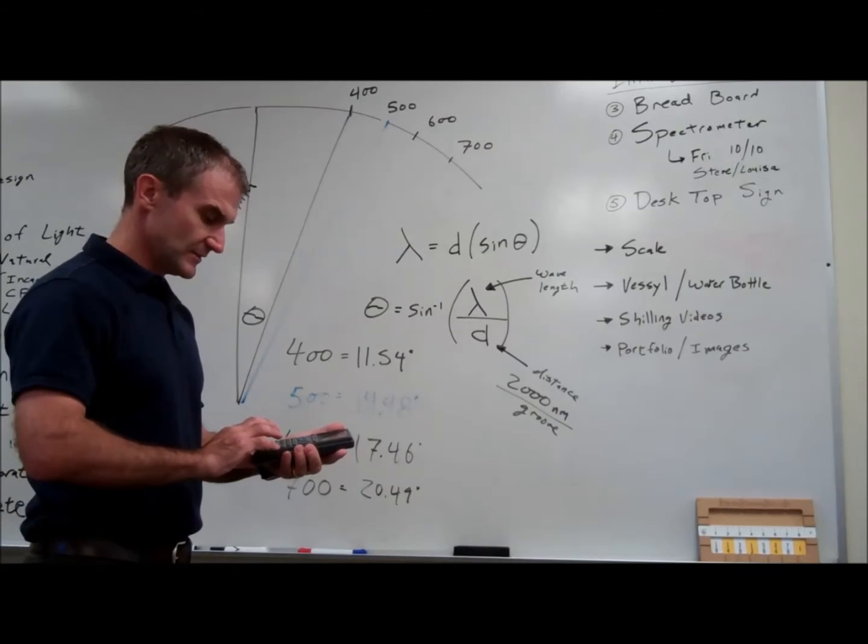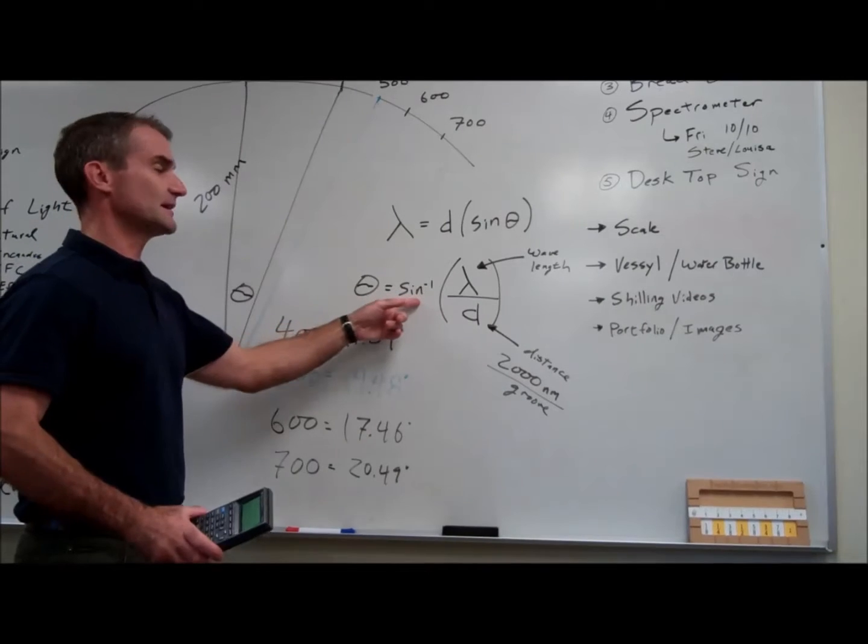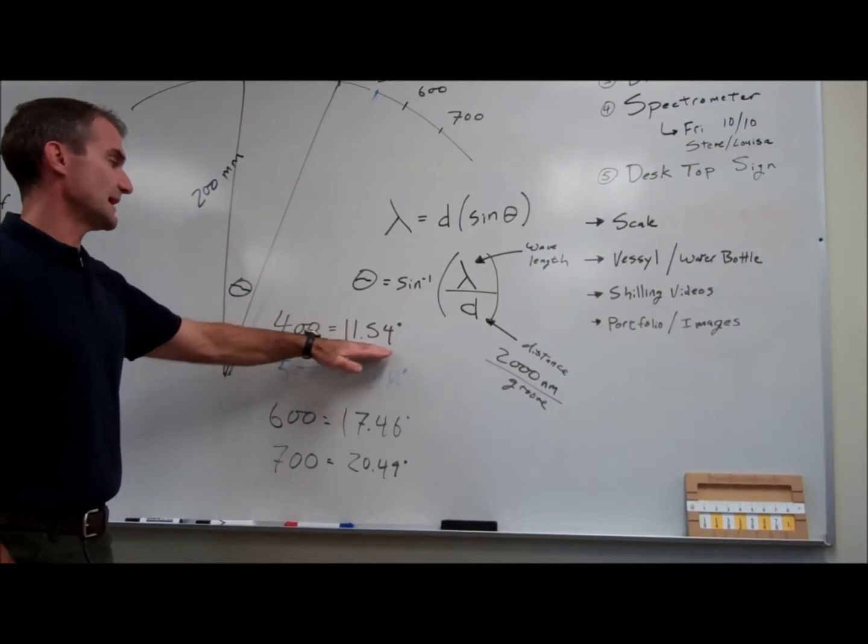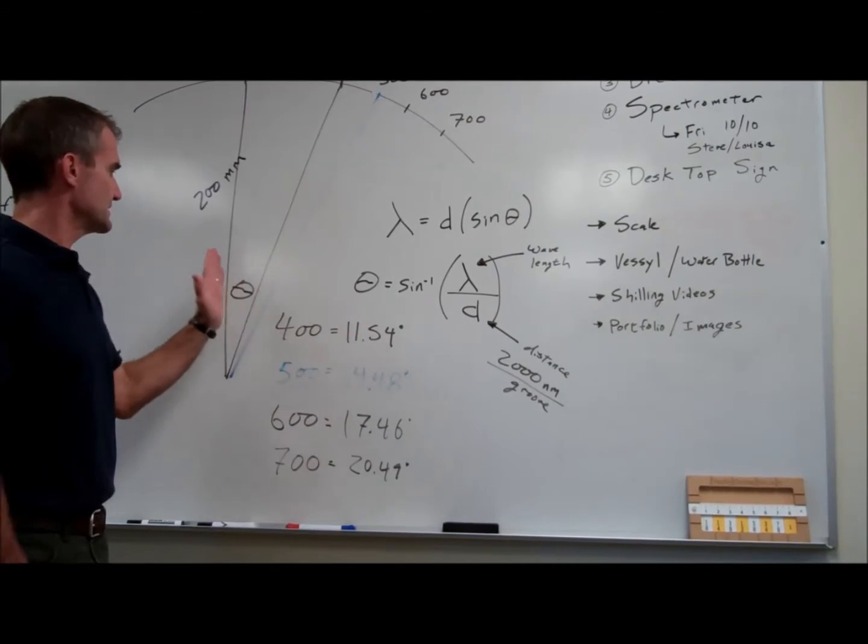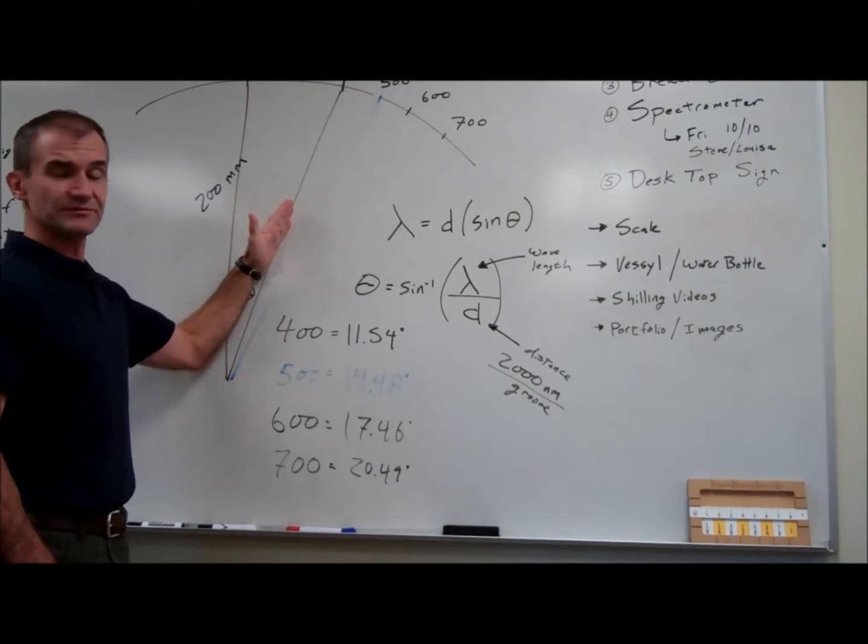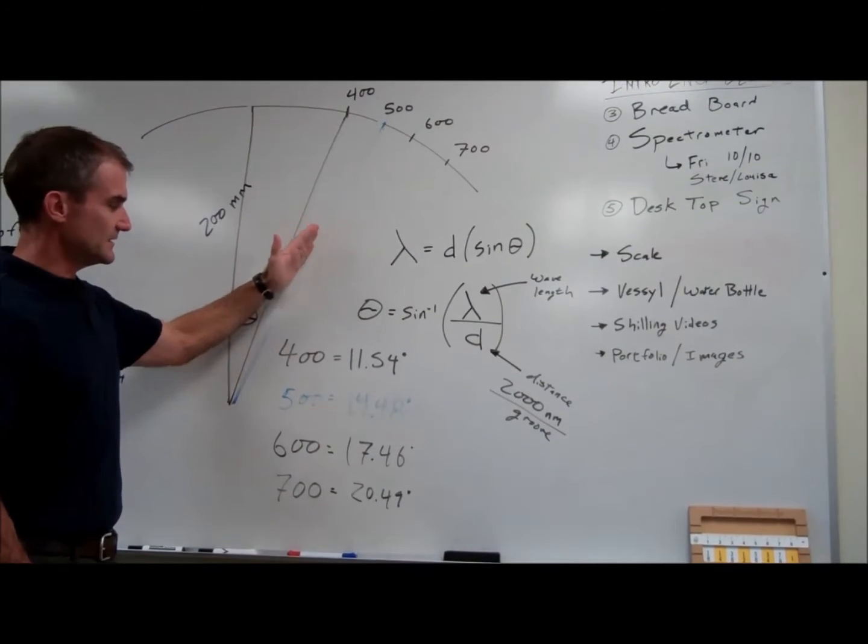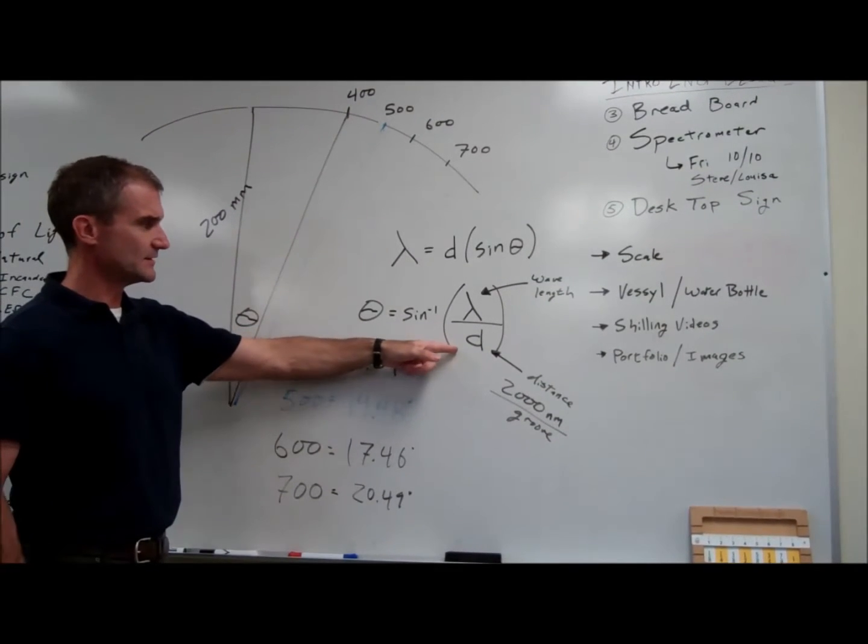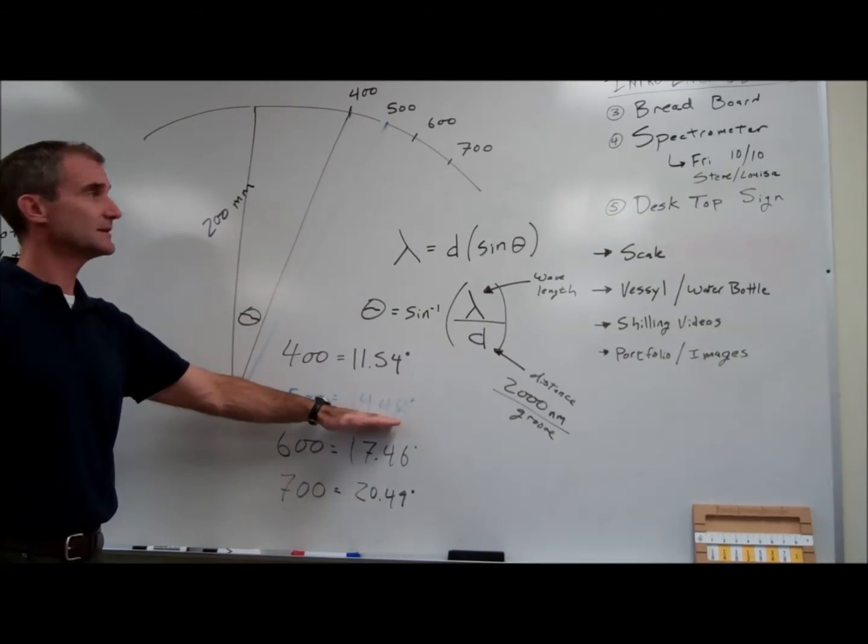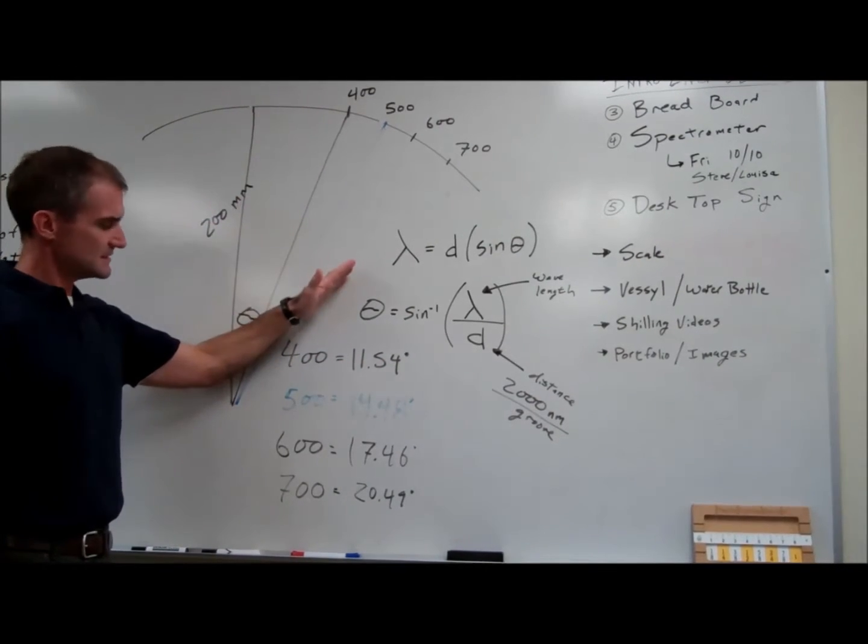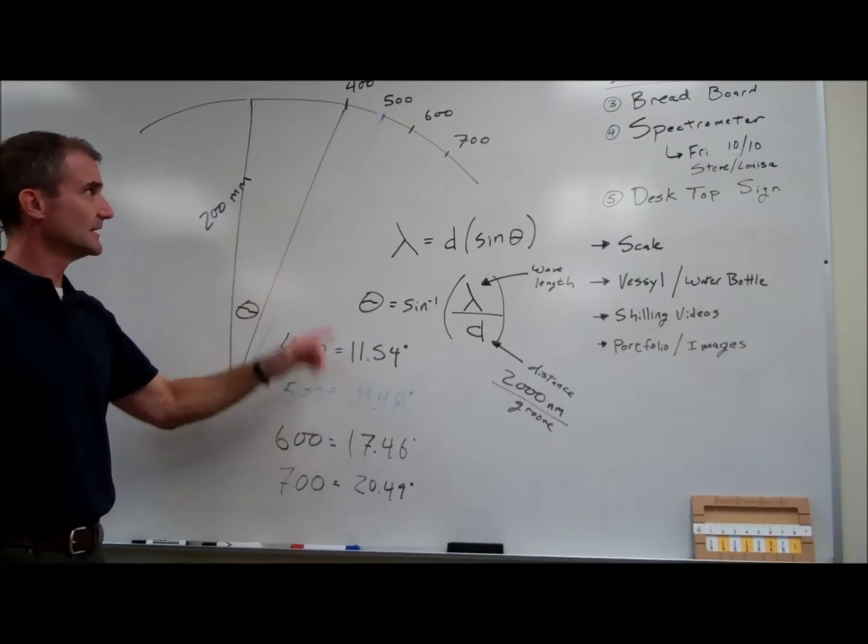So that gives me 400 divided by 2000, and that's 0.2. I took the arc sine of 0.2 and that gave me an angle of 11.54 degrees. So this angle on the first one should be 11.54 degrees. Then on the next one at 500, I did the same thing: 500 divided by 2000 point 25, the inverse sine gave me 14.48 degrees. Then 600 divided by 2000, the arc sine gave me this angle, and then at 700 it gave me that angle.